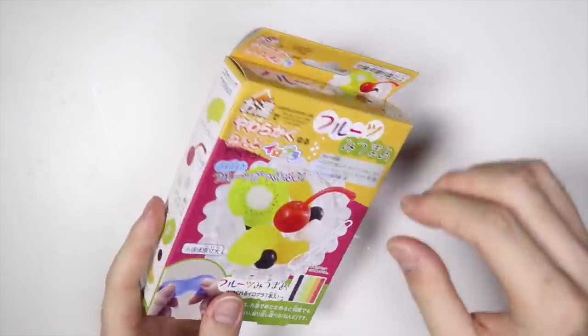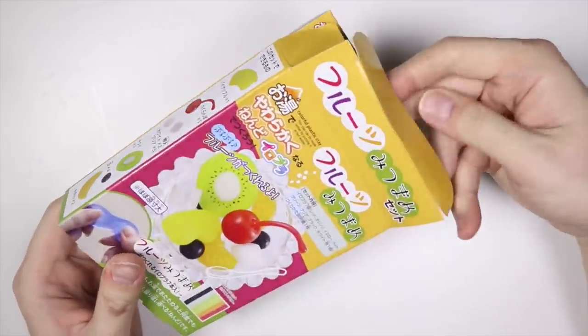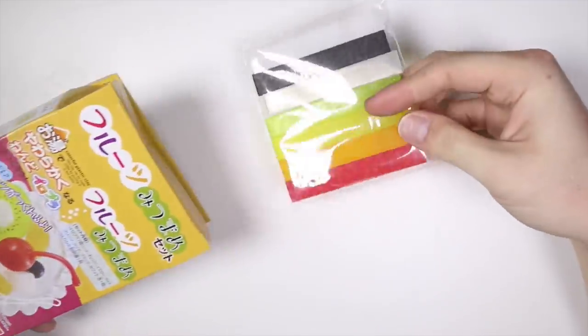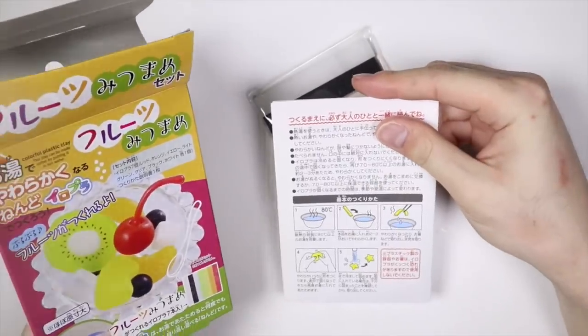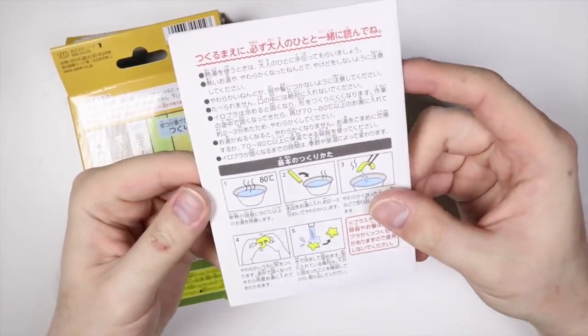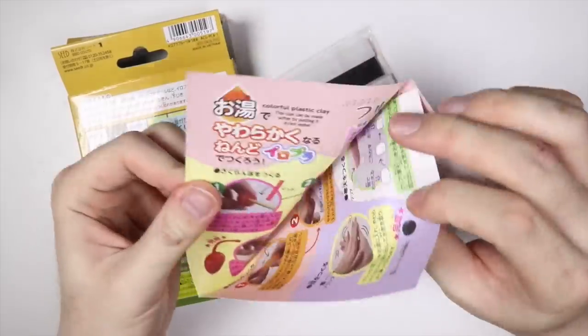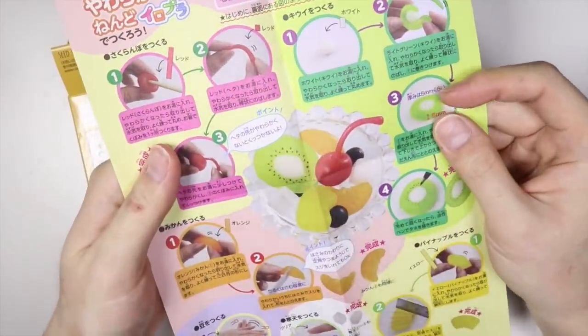And for the Oyumaru fruit kit, I thought it had more but inside it was just Oyumaru. I thought there was going to be a parfait bowl and everything so I was kind of sad that it didn't come with all that. But it had instructions on how to make all the fruit.